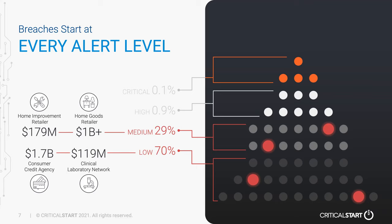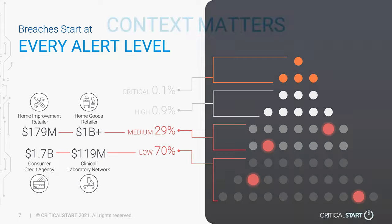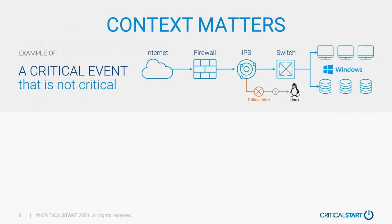We've seen billion dollar losses from breaches that started in medium and low priority alerts. An example is the Department of Veterans Affairs — that was a low priority alert when they had their breach, and it impacted me personally. So the question is: why can we not contextualize and prioritize the right alerts? The answer is that context matters. We can't look at priority without including context to understand what matters to a business — not just CVE or MITRE ratings, but what actually matters to the business based on what's happening in their network.